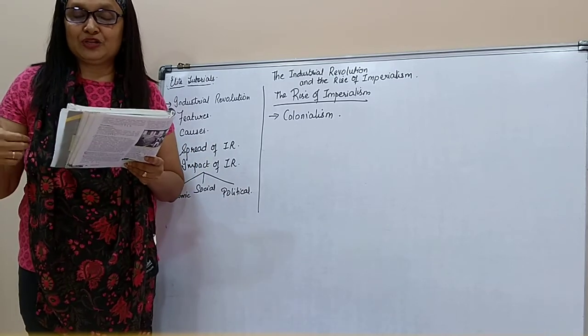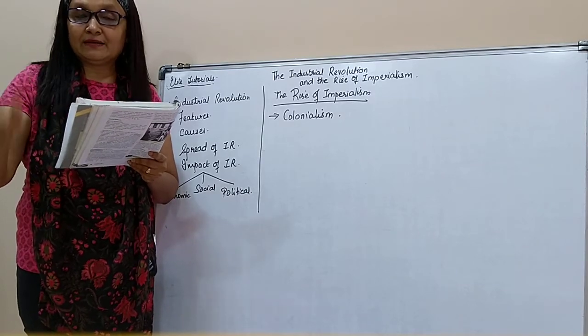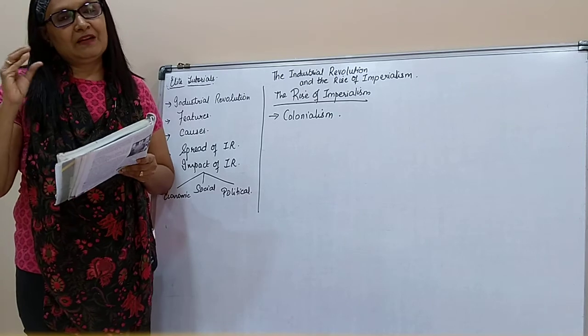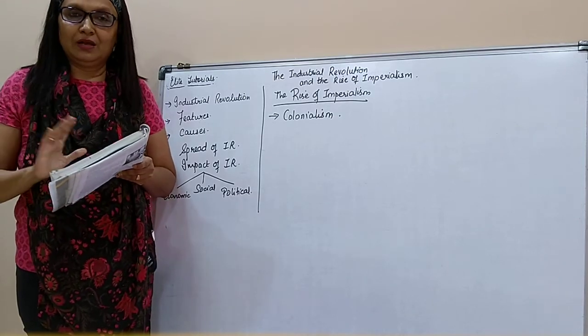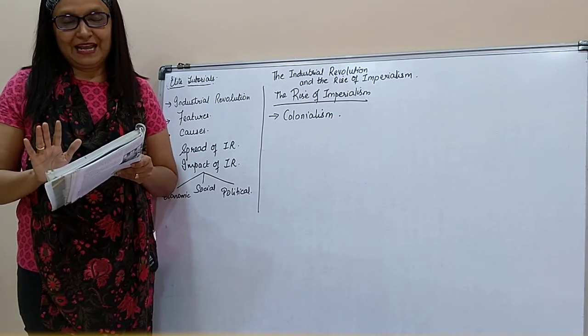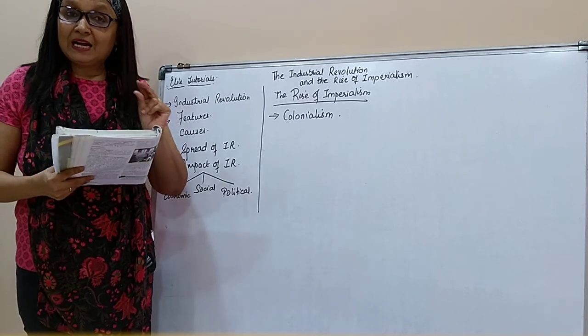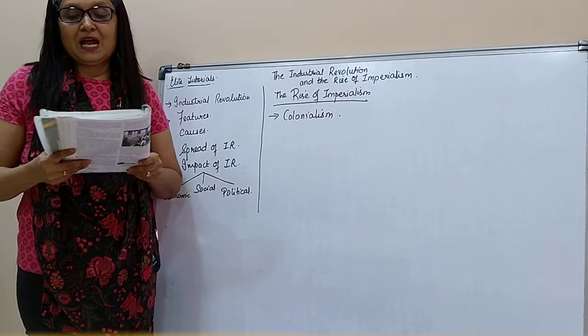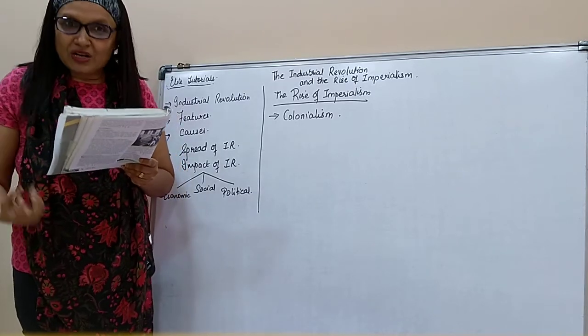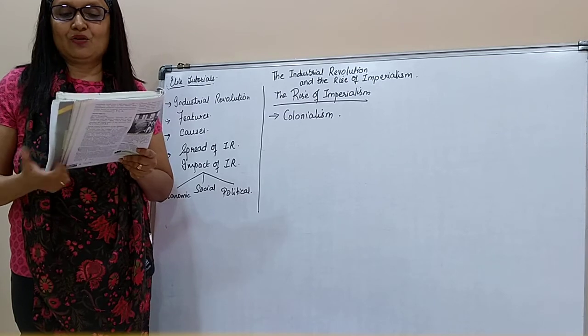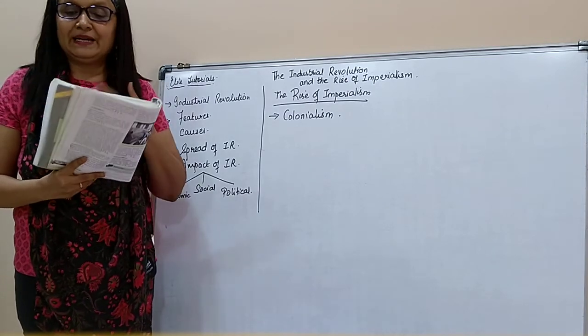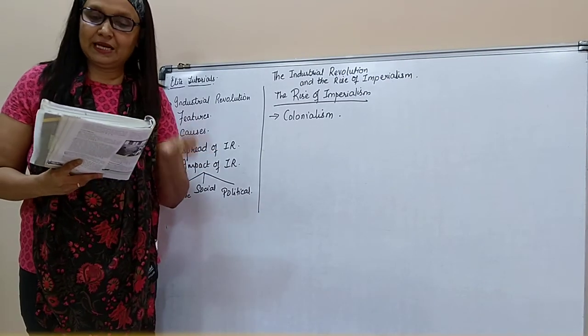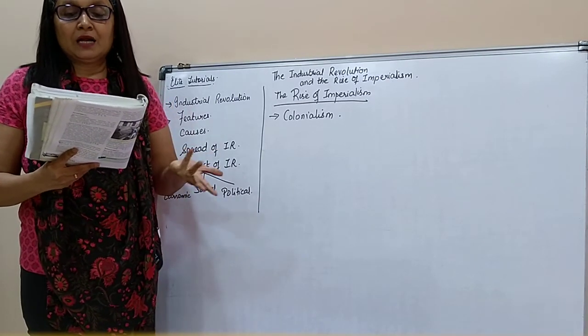What is the meaning of colonialism? It is a policy by which one nation acquires control over another country, either partly or wholly. Partly or fully. India was fully under the control of England. Partly was the 13 colonies of America under England. The conquered country becomes a colony of the conquering nation known as a colonial power. So India was basically called a colony and England was called an imperialistic country.